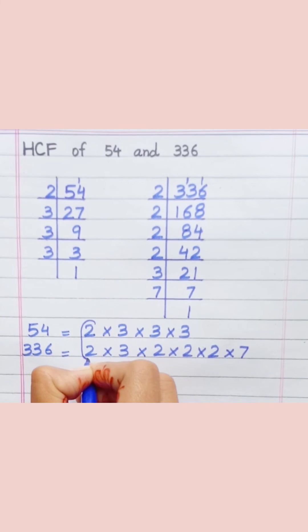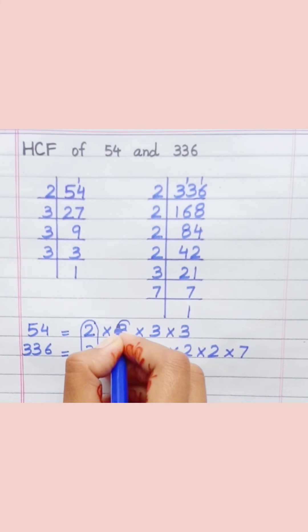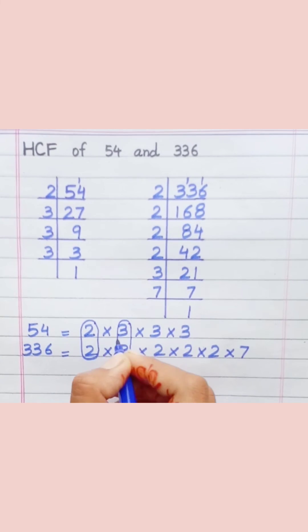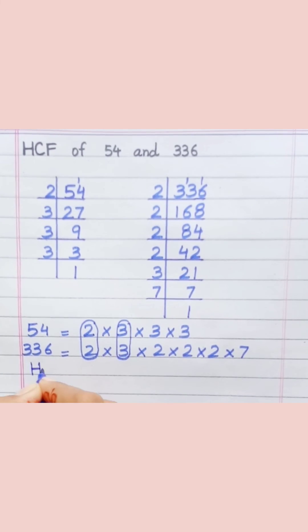Loop the common prime factors among both. HCF equals 2 times 3 equals 6.